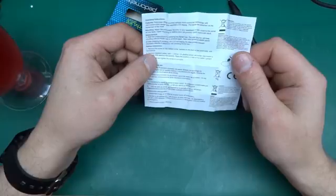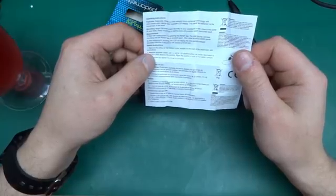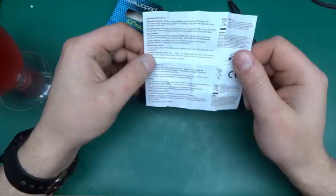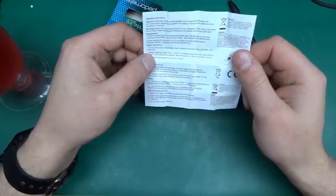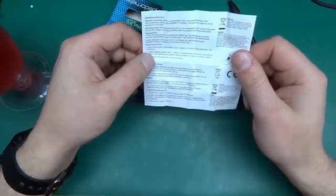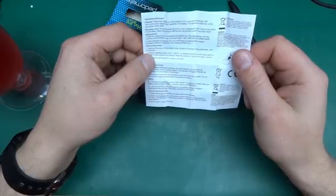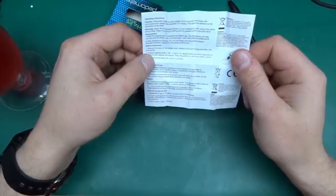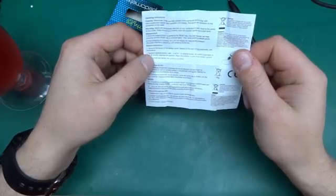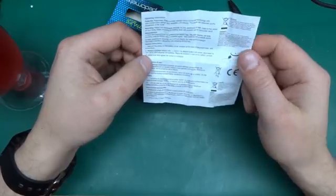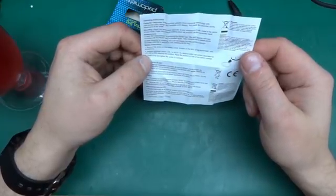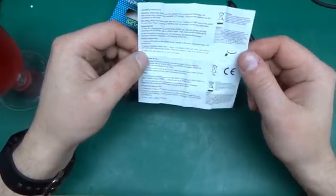The step counter will keep counting until the reset key is pressed again. Max value shown is 99,999 paces. After stopping, LCD will display step paces, mileage, kilometer, calories in sequence with pressing mode key. And battery instructions - battery to be inserted with correct polarity.